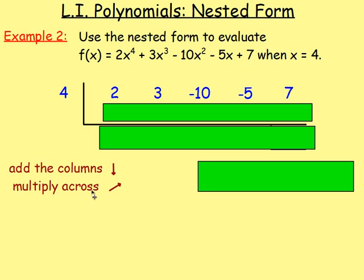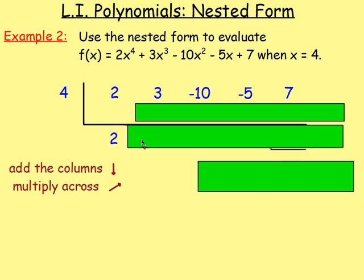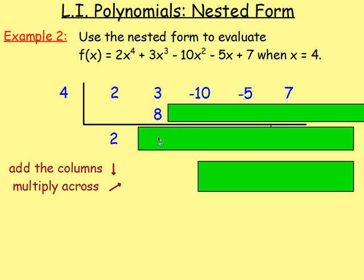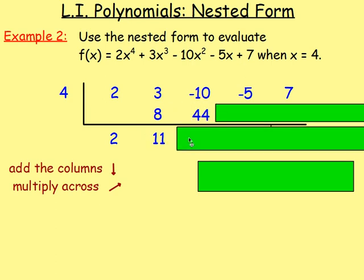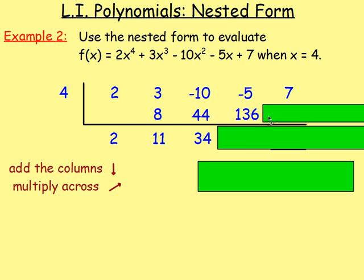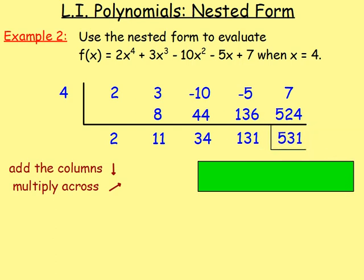After that, you're doing the same thing. You add the columns, you multiply across. Bring the 2 down. 2 add 0, it's just going to be 2. Multiply across: 4 times 2 gives you 8. Add these, you end up with 11. Multiply there, you end up with 44. If you add them, you're getting 34. Multiply there, 4 times 34, that gives you 136. If you add them together, negative 5 add 136, you end up with 131. 4 times 131 gives you 524. And if you add them together, 7 add 524, you get 531.